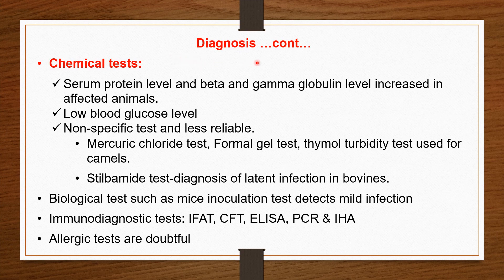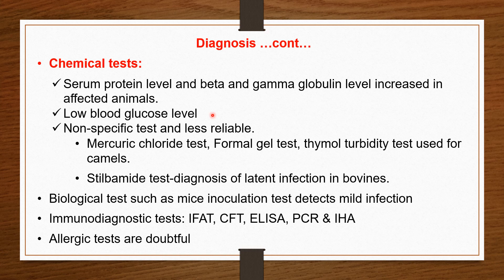In continuation of the diagnosis, certain chemical tests are also performed. Total serum protein levels and beta and gamma globulin levels are increased in affected animals. Importantly, blood glucose level is low — hypoglycemia. This is because of two reasons: one, the animal is off feed due to anorexia or starvation; and two, the trypanosome parasites multiply by binary fission very fast, and their activities require more glucose, so they consume more glucose, causing hypoglycemia.